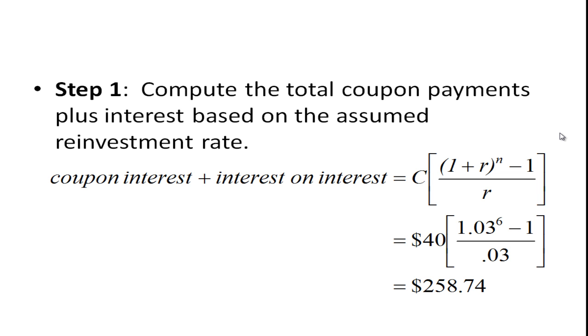So the first thing we need to do is compute the total coupon payments plus interest based on the assumed reinvestment rate. We said the rate was 6%, but it's 3% per six-month period. We're going to have six three-month periods.